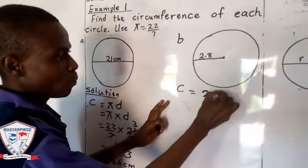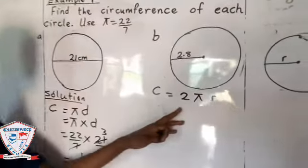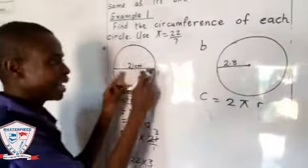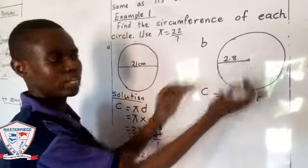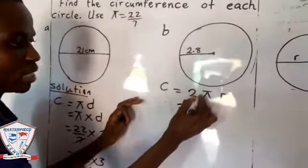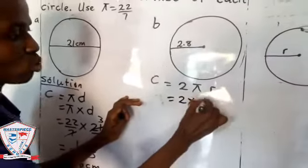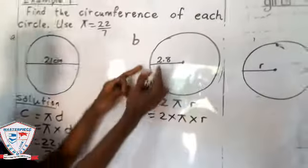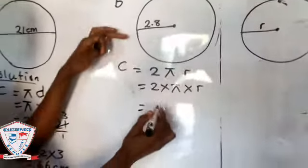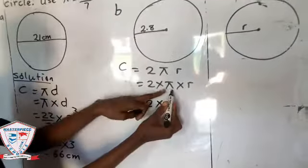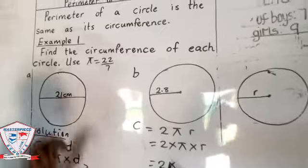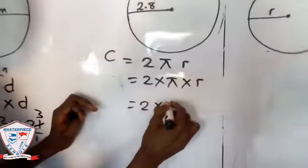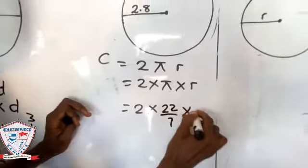The formula you are going to use is C = 2πr. You are either given diameter or radius. Since you are given radius here, you use this formula. This is the same thing as 2 × π × r. Now how do you use this? You have 2 times, they say we should use π = 22/7.